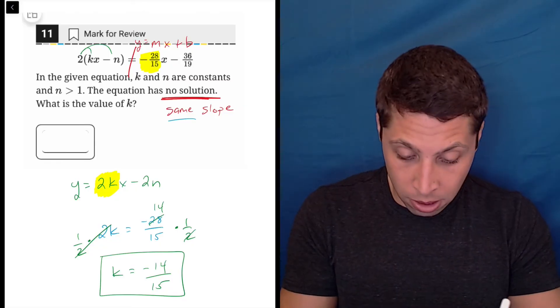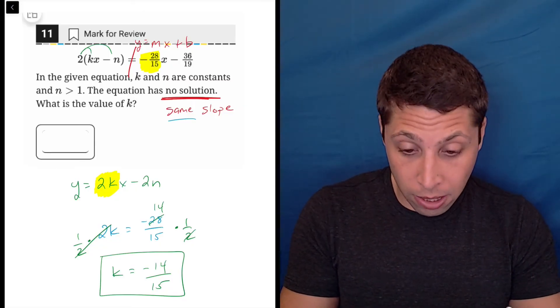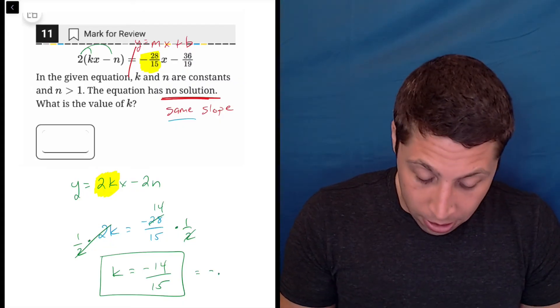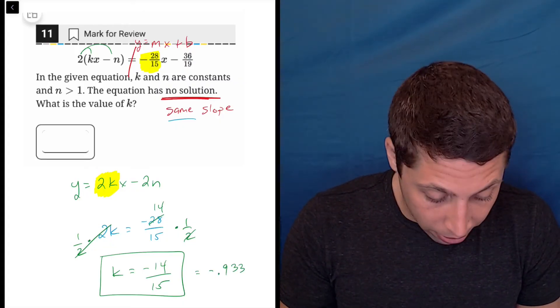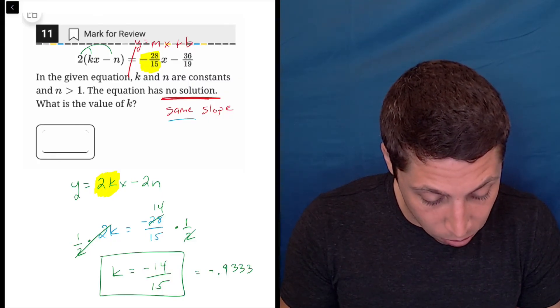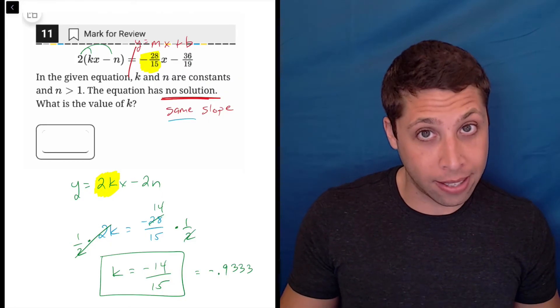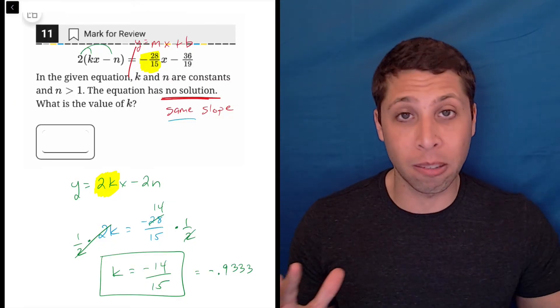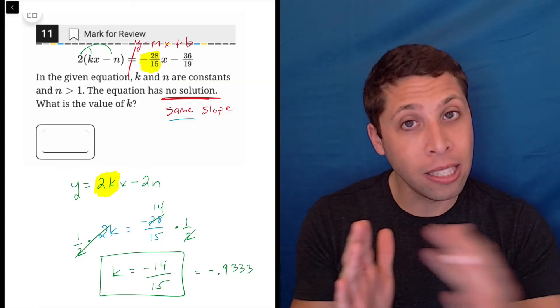As a decimal, negative 14 divided by 15, you got to be careful here bubbling this, negative 0.9333, and you got to fill it up completely. So that's 1, 2, 3, 4, 5 spots. I think that that's it. I think that that would be the actual way to fill it up. If it's a repeating decimal, you have to fill in as many spots as it'll take.